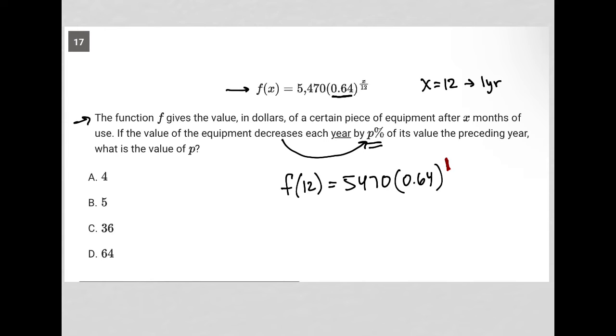So then what's happening here? I'm multiplying this 5,470 times 0.64. Well, 0.64 is the decimal form of 64%. So basically, this is saying 64% of 5,470 is where we should be in terms of value after a year.